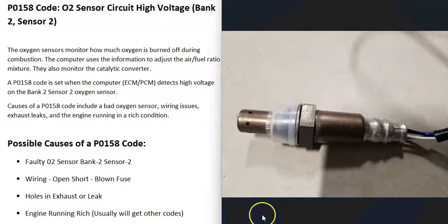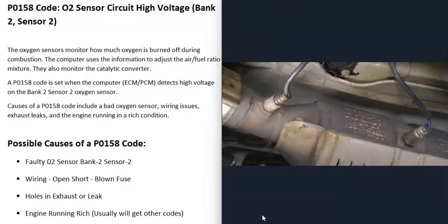What does this mean? There are oxygen sensors located down on the exhaust. They do two things: first, they monitor how much oxygen was burned off during combustion, and second, they monitor the catalytic converter. When you get this P0158 code, the computer is seeing a problem with the bank 2 sensor 2 O2 sensor.